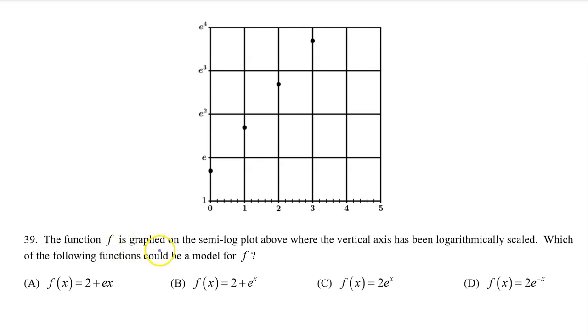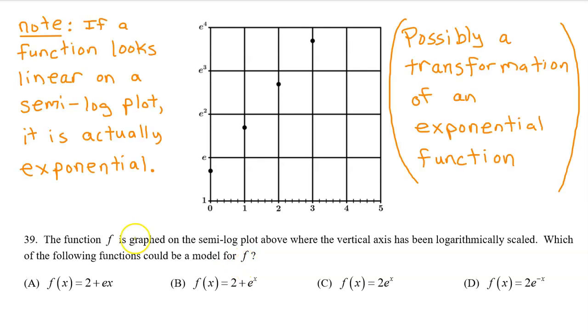Number 39. The function f is graphed on the semi-log plot above where the vertical axis has been logarithmically scaled. Which of the following functions could be a model for f? A key thing to know about a semi-log plot is that if a function looks linear on a semi-log plot, it is actually exponential, or at least a transformation of an exponential function. For that reason, we can eliminate option A as a possibility. This function looks linear on the semi-log plot. That means it's actually based on an exponential function, and option A is linear.